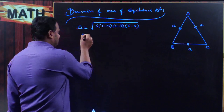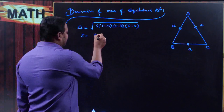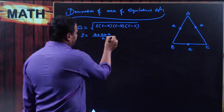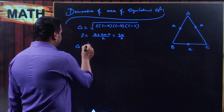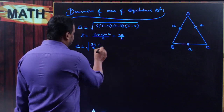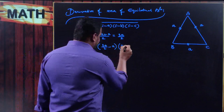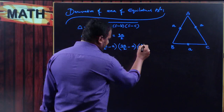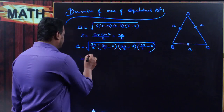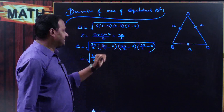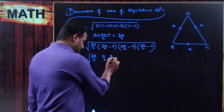Where what is s? s is equal to the semi-perimeter of the triangle, that is the sum of lengths of all three sides divided by 2. So, the first side is a, the second side is also a, and the third side is also a, whole divided by 2, which is equal to 3a divided by 2. And then, area of triangle equals square root of s, which is 3a divided by 2, into s minus a, which is 3a by 2 minus a, into s minus b, which is 3a by 2 minus a.